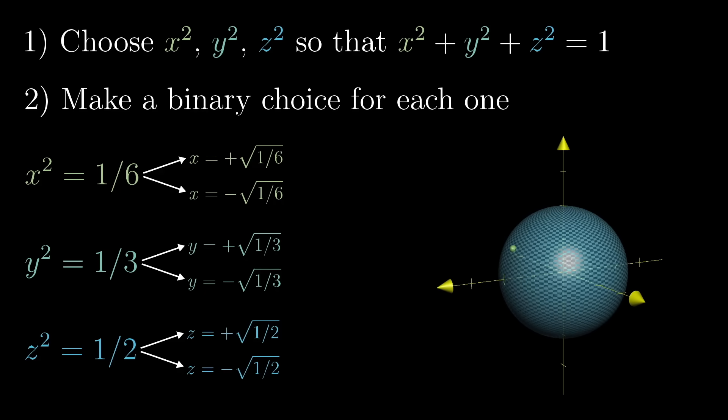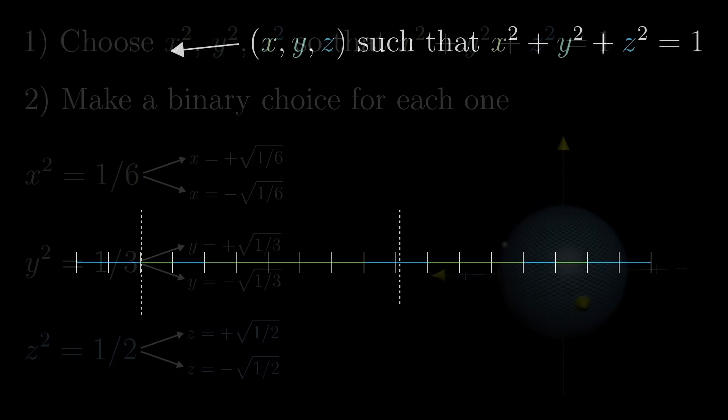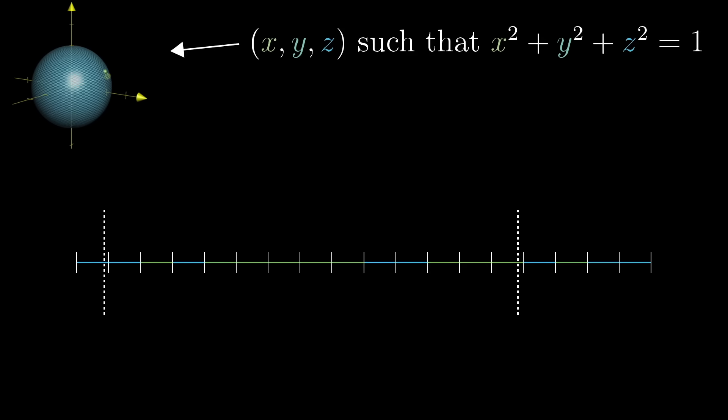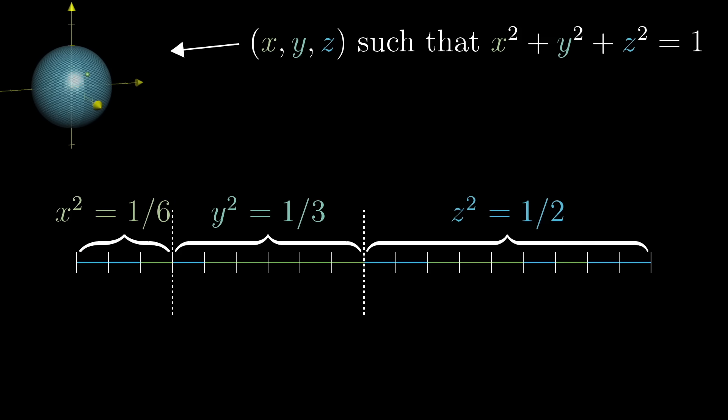All right, hang with me now, because this is the key observation of the whole video. It gives a correspondence between points on the sphere and necklace divisions. For any point x, y, z on the sphere, because x squared plus y squared plus z squared is one, you can cut the necklace so that the first piece has a length x squared, the second has a length y squared, and the third has a length z squared.